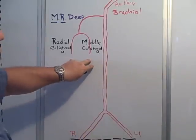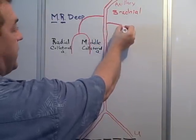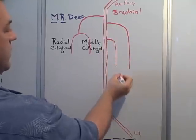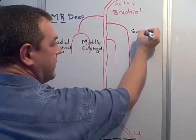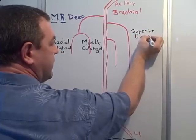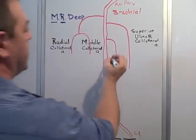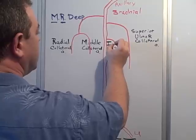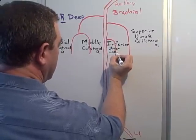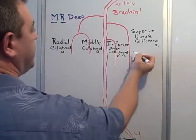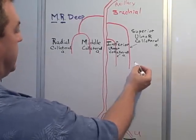Those make up two of the four collateral arteries. The other two collateral arteries are the superior ulnar collateral artery and the inferior ulnar collateral artery.